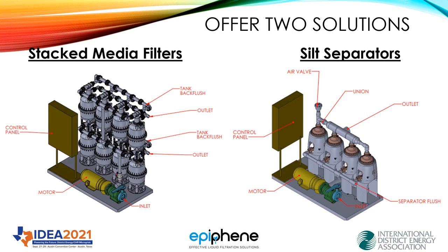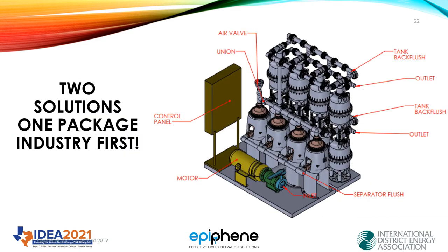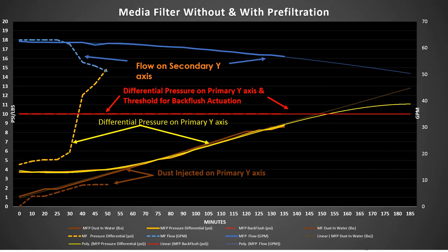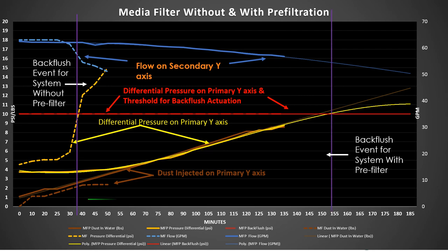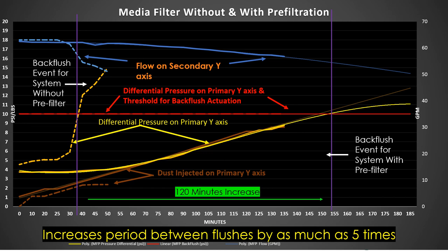We can offer skidded systems for media or for separation. Or in some cases where it's not just separators or not just media filters but a combination of both is needed, we can provide the highest efficiency removal in the industry. If you look at these dashed lines, they represent without a pre-filter from our separator and the solids line with a pre-filter. Without a pre-filter, we would have had to flush in 30 minutes. With a pre-filter, we could have gone all the way out to 150 minutes — that's over two hours difference, and actually five times longer for this filter to run.